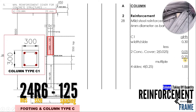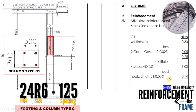0.25 meter itu baru 1 side sahaja — sisi atas. Kita kena darabkan dengan 4 bahagian: 0.25 × 4 = 1 meter. Kemudian kita kena tambah pula dengan hook. 1 hook adalah 12D, jadi formula untuk 2 hook adalah 24 × diameter reinforcement bar kita. 24 × 0.006 meter (saiz diameter R6) = 0.14 meter. Jadi 1 meter + 0.14 meter = 1.14 meter bagi 1 link.